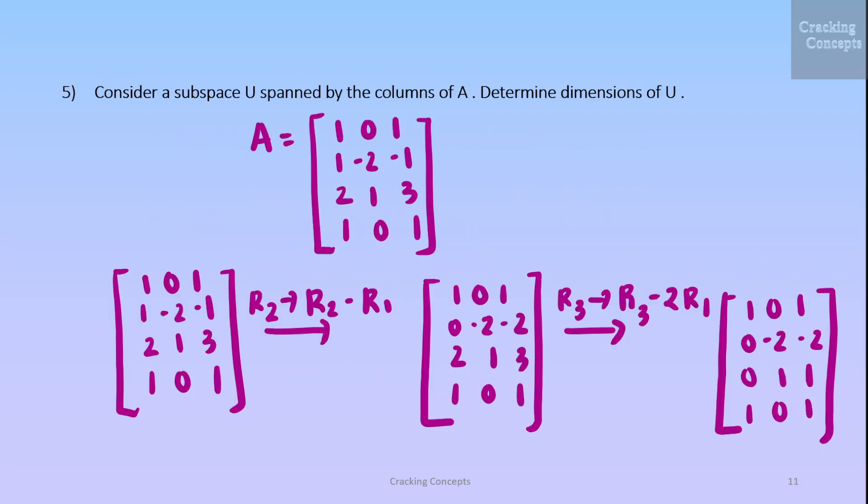Now we'll move on to the last question. Here we are asked to consider a subspace U which is obtained by spanning the columns of this matrix A here. We need to determine the dimensions of the subspace U. So for this we'll simplify this matrix, convert it into row echelon form using row transformations. For that first we'll subtract the second row from the first row. So we'll get 0 here. Then we subtract the third row from 2 times the first row. So we'll get this. Then we go for subtracting the fourth row from the first row.